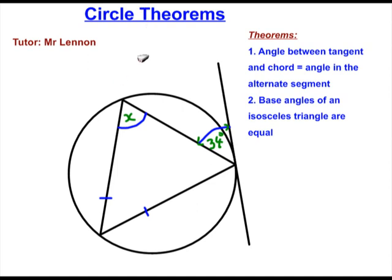Okay, so we're looking at another question on circle theorems. This question deals with two aspects of circle theorems. For example, we have a tangent right here and a chord right here. We know that there's a theorem that states the angle between a tangent and a chord is equal to the angle in the alternate segment. So let's look at this.